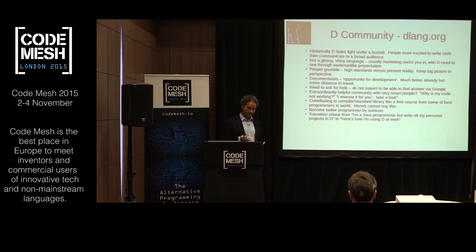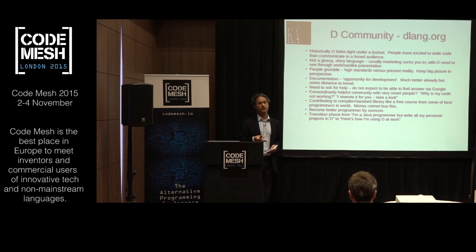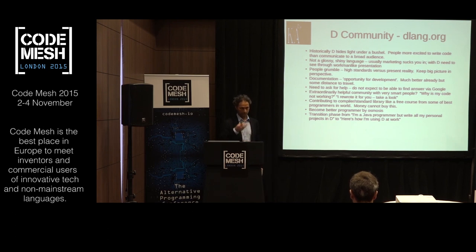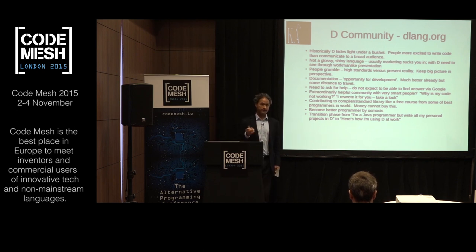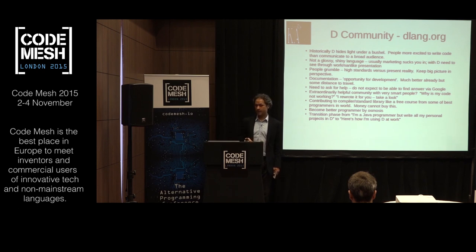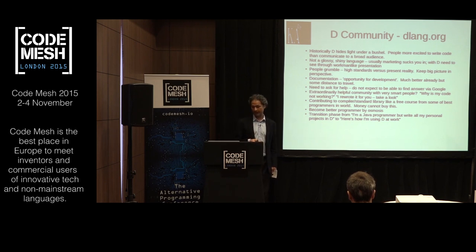There was a guy doing scientific computing who found that D was fast, but then Python multiprocessing was much faster — it was due to memory allocation in a loop. The upside of garbage collection is it's easy; the downside is that in the beginning you're not clear about what it's doing. I rewrote his code for him and it was much faster. Because it's a small community, you do have the benefit of being able to interact with some of the best programmers in the world.